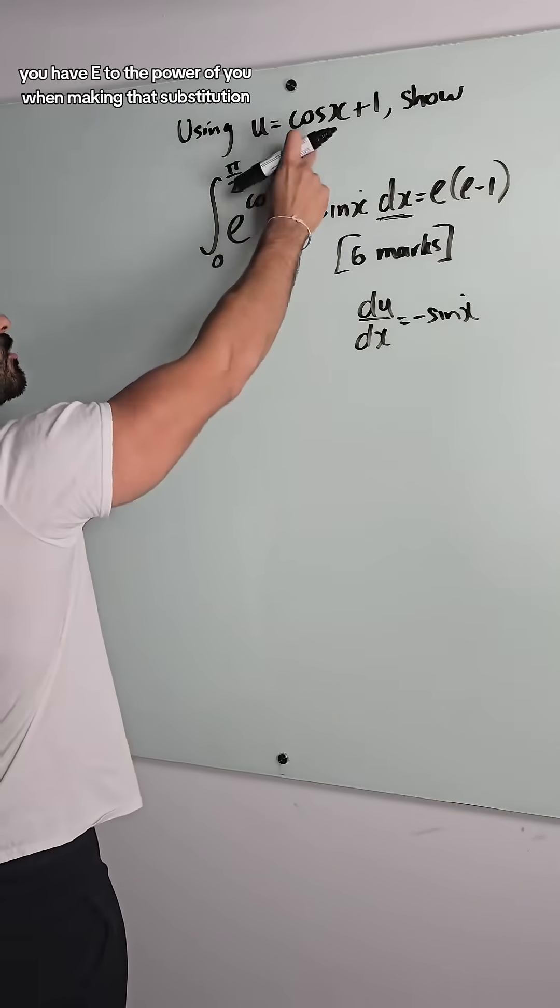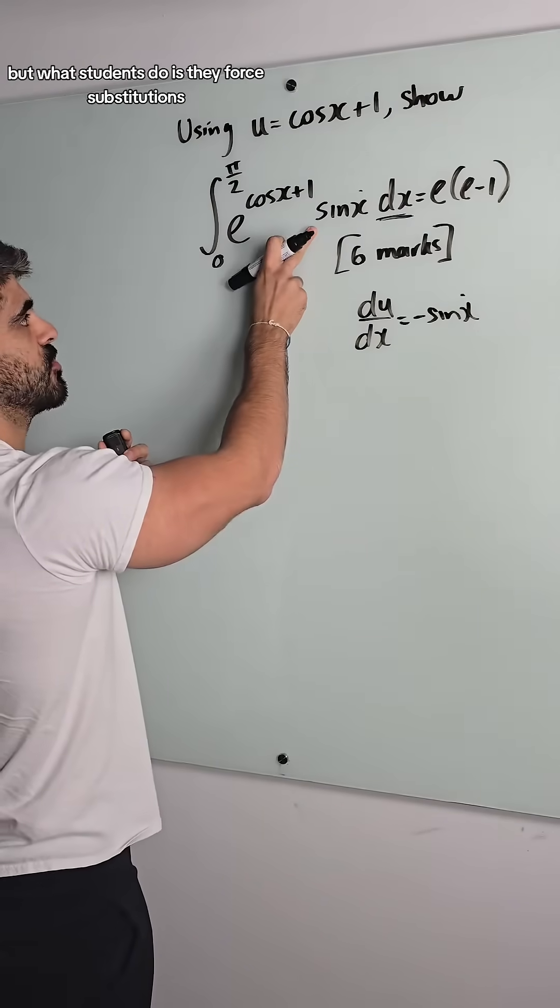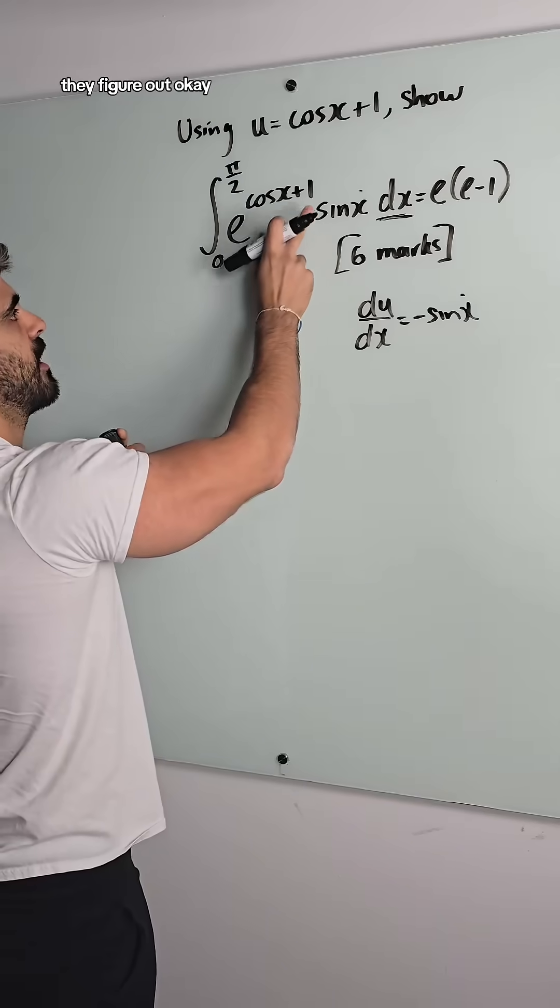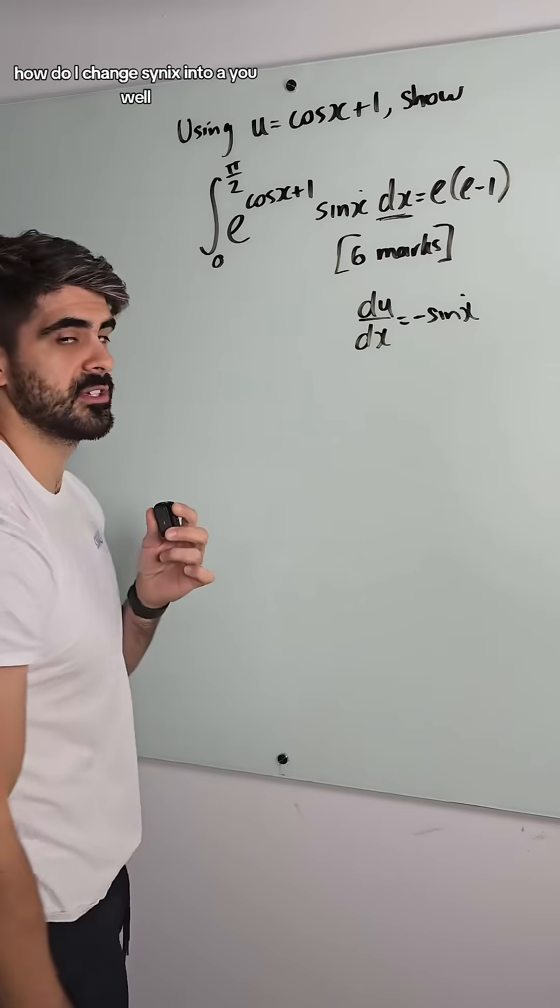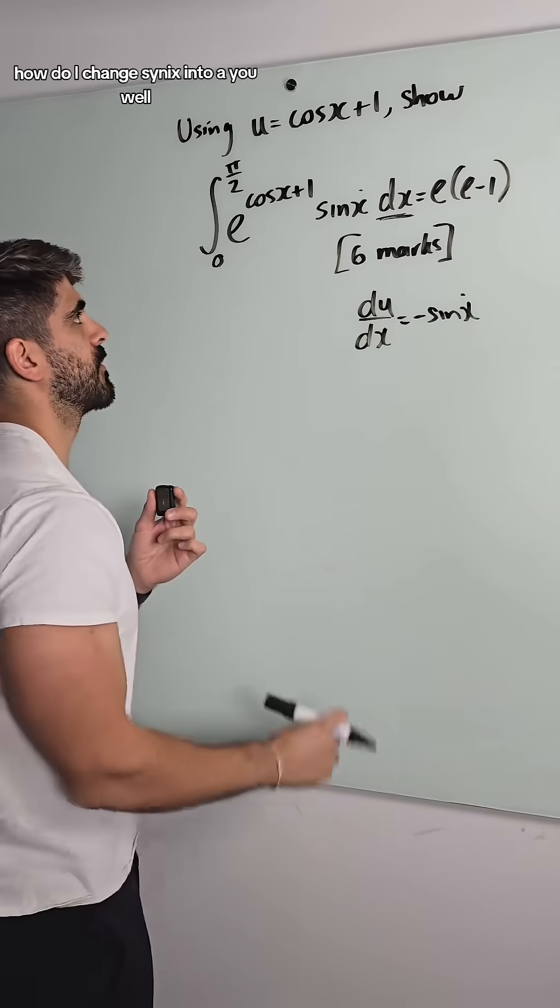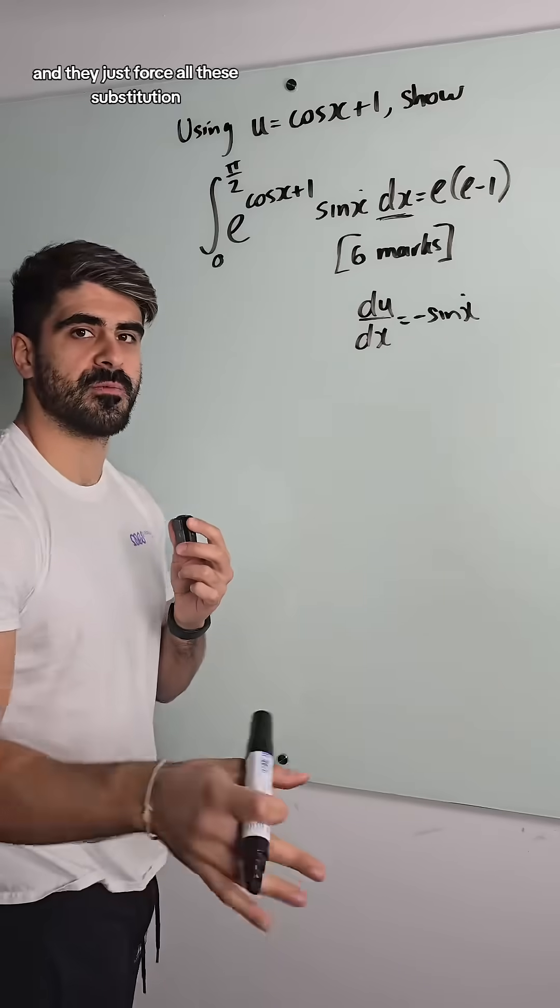And the reason we should always do this first is, yeah, you have e to the power of u, we're making that substitution. But what students do is they force substitutions. They figure out, okay, how do I change sin x into u? Well, we'll change this x into u.